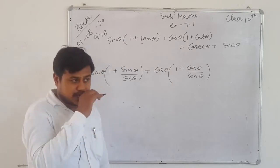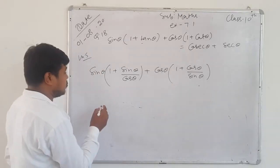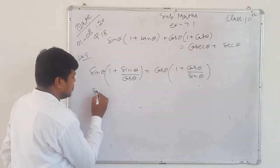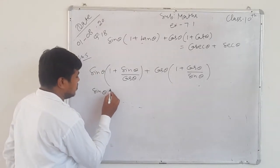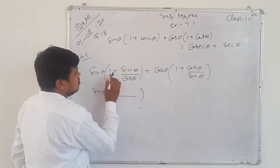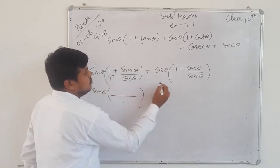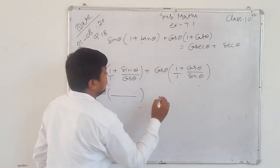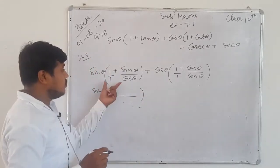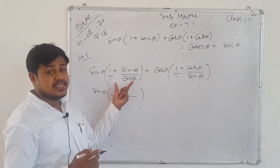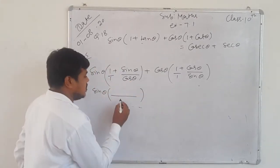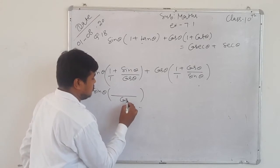These brackets do not have a common LCM to solve directly. So for sin θ, take LCM of 1 and cos θ, which is cos θ. Multiply the numerator — cos by cos — giving (cos θ + sin θ·cos θ... wait, we get sin θ into (cos θ + sin θ)/cos θ. Similarly for the second part: LCM is sin θ.